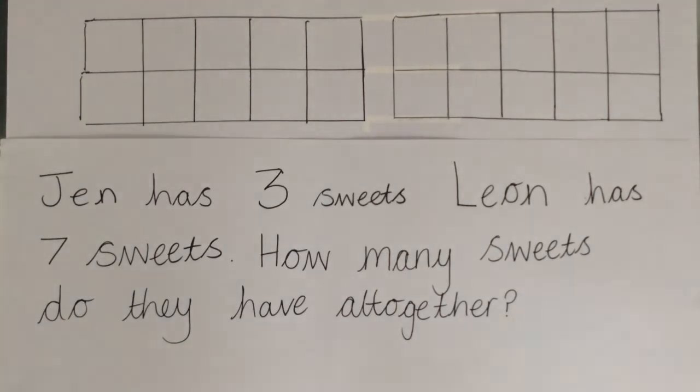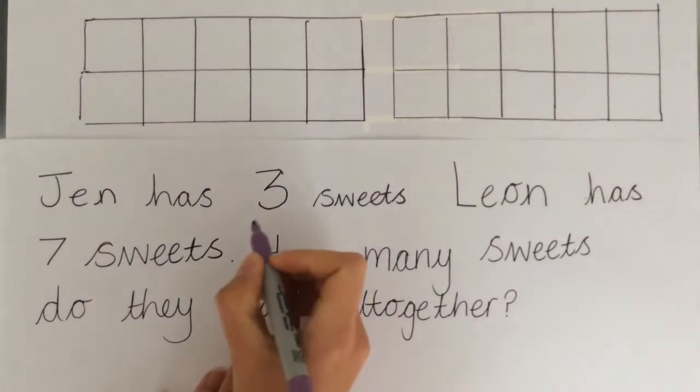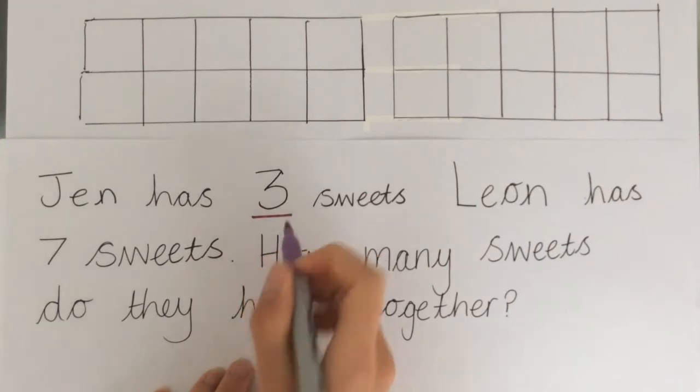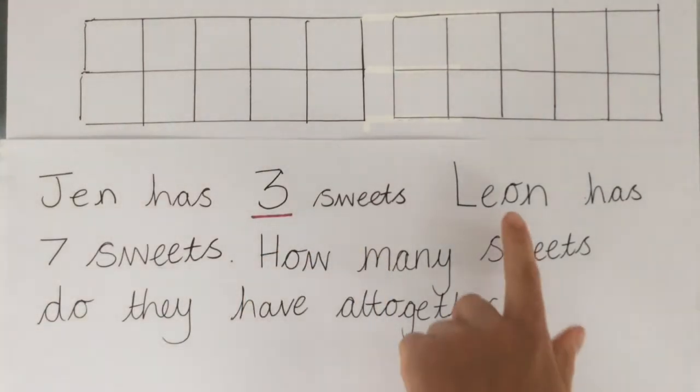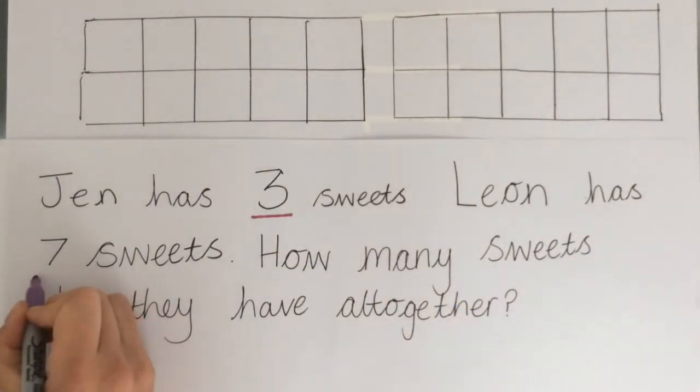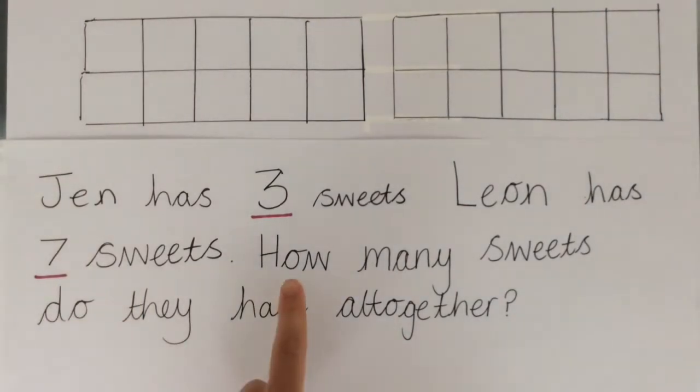I can see the number three because Jen has three sweets. So I'm going to underline that. I can also see the number seven because Leon has seven sweets. And they're wanting to find out how many they have all together. And like I said at the beginning, all together is another way of saying we're going to add things together.